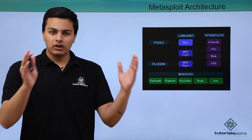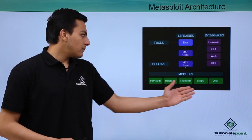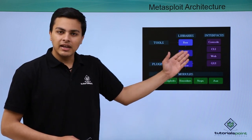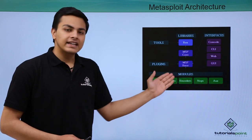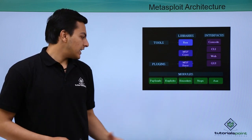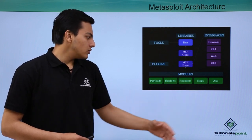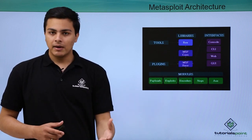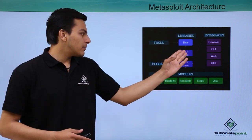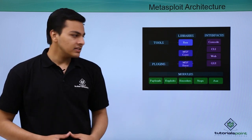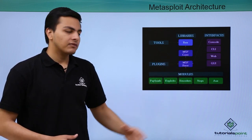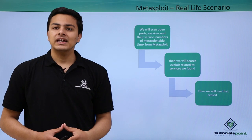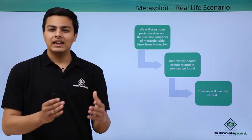Now let's discuss Metasploit's architecture — how the framework is organized internally. There are three main components: modules, interfaces, and libraries. Modules contain different directories holding payloads, exploits, auxiliary modules, encoders, and so on. The libraries contain core Metasploit functions like the MSF base library, MSF core libraries, plugins, and so on.